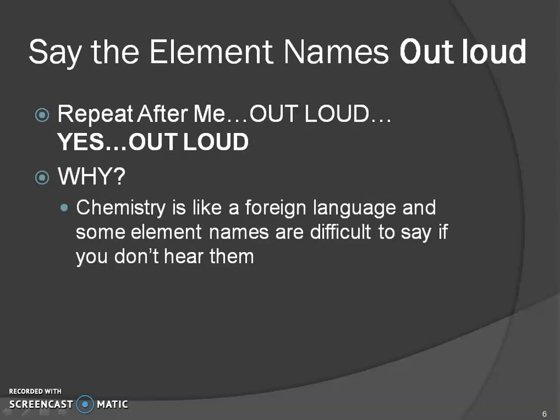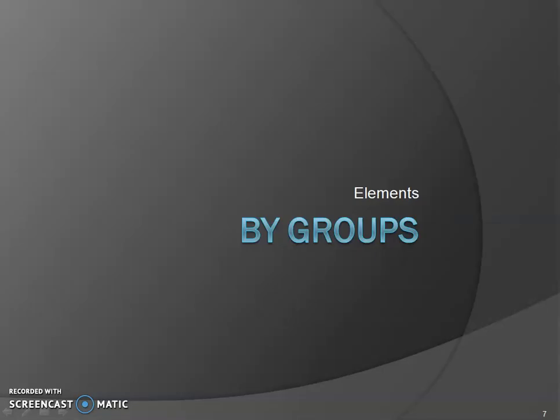First though, I want you to be able to say the elements out loud — yes, I want you to repeat after me. Why? Because chemistry is going to be like a foreign language and some of these element names are very difficult to say if you've never heard them before. So I do want you to repeat after me and say them out loud. I'm going to say the symbol and the name and pause. I'm doing them by groups so you can be aware of the group location as well.